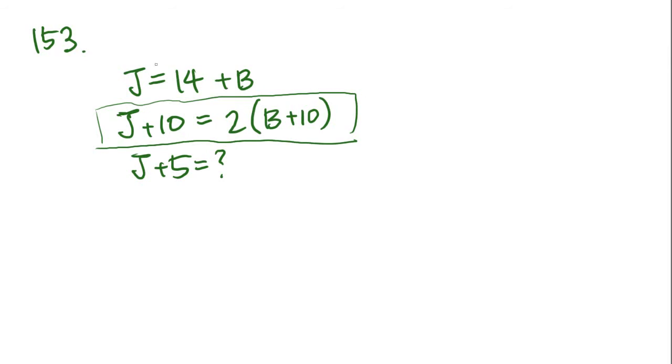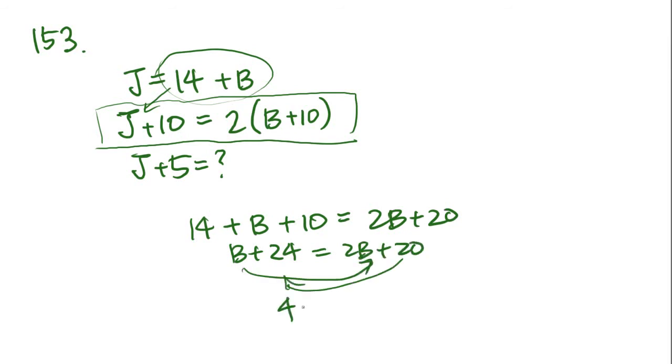So how do we solve this? First thing we want to do is plug in 14 plus B into this equation, and we get 14 plus B equals 2B plus 20. Let's add these together first. So B plus 24 equals 2B plus 20. Move the B over, move that over, and you get 4 equals B. So we know B equals 4, so Bill is 4 years old. Well, if Bill is 4 years old, then Jack is going to be 14 plus 4. Jack equals 18, he's 18 years old. So what is he going to be in 5 years? That's going to be 18 plus 5 equals 23. And 23 is answer D.